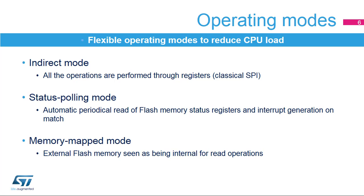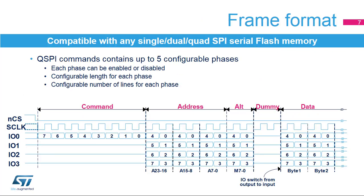The Quad SPI Memory Interface operates in three modes. 1. Indirect Mode, where it behaves as a classical SPI interface and all operations are performed through registers. 2. Status Polling Mode, where the flash status registers are read periodically with interrupt generation. And 3. Memory Mapped Mode, where the external memory is seen as an internal memory for read operations.